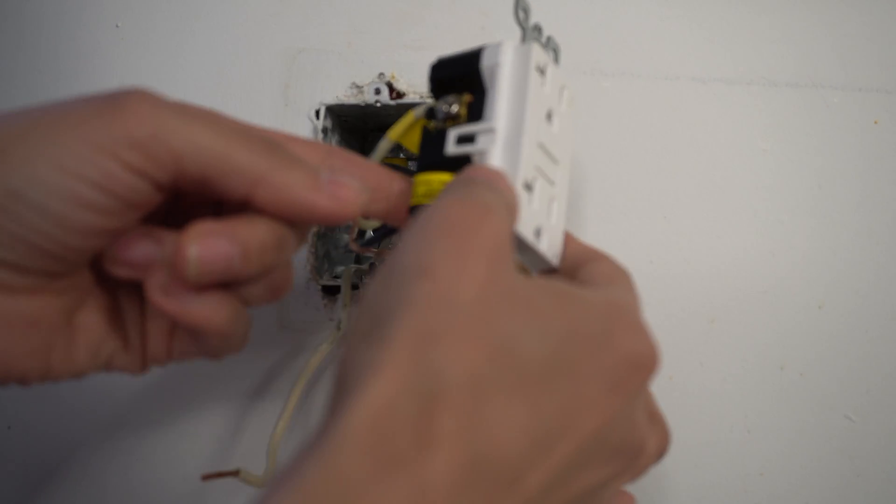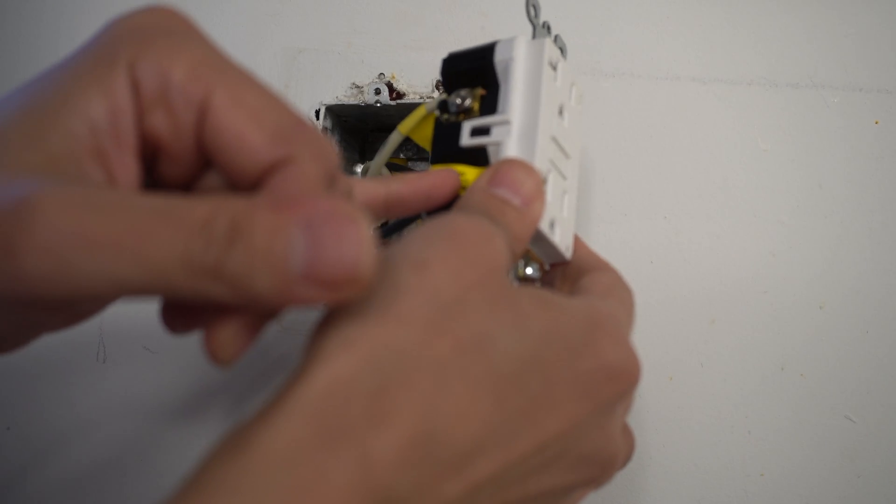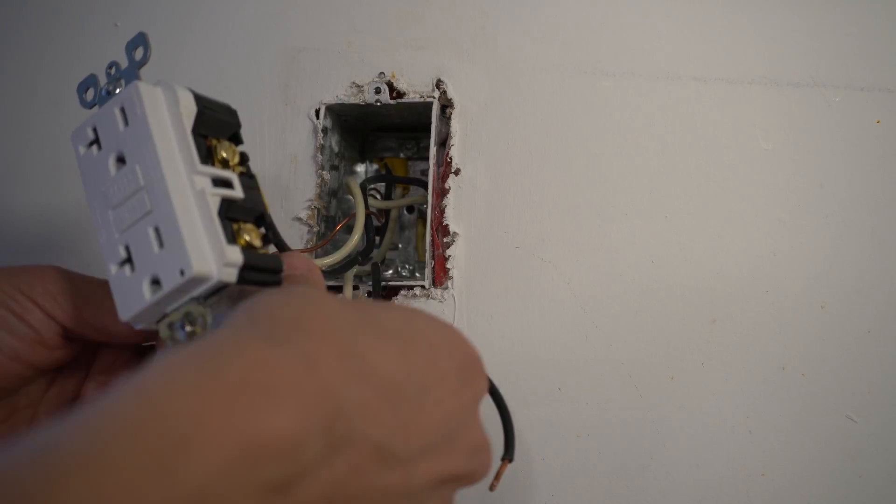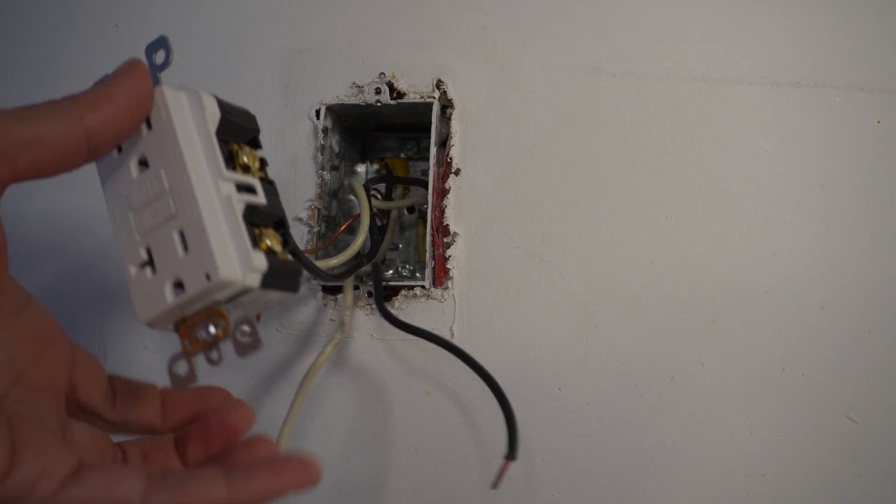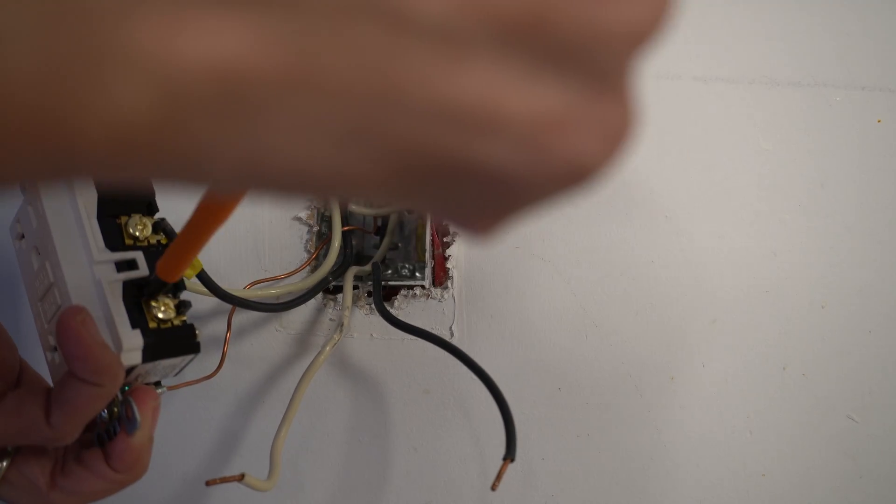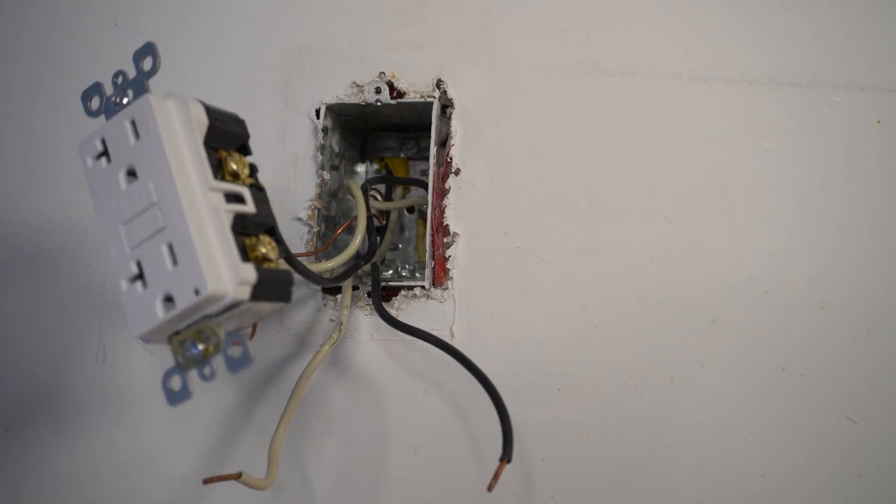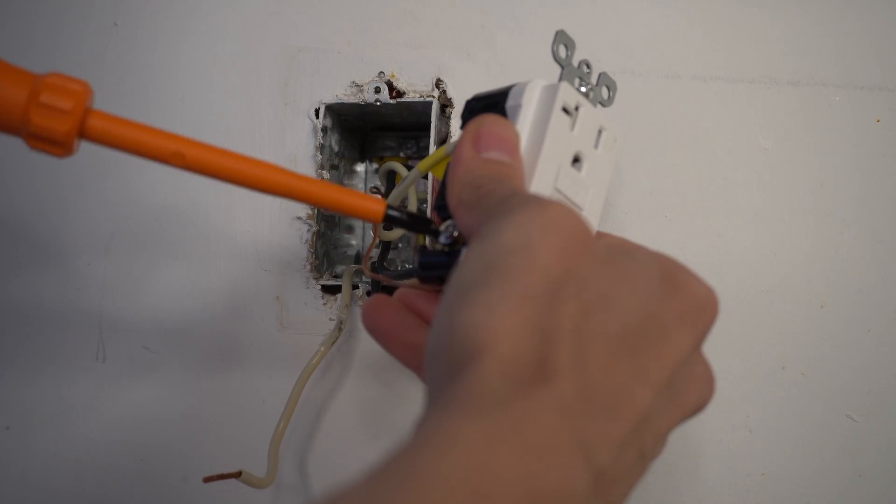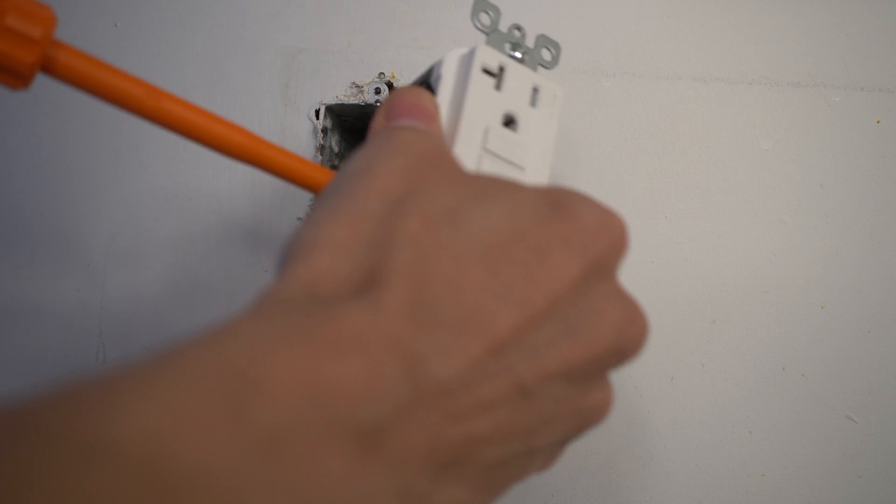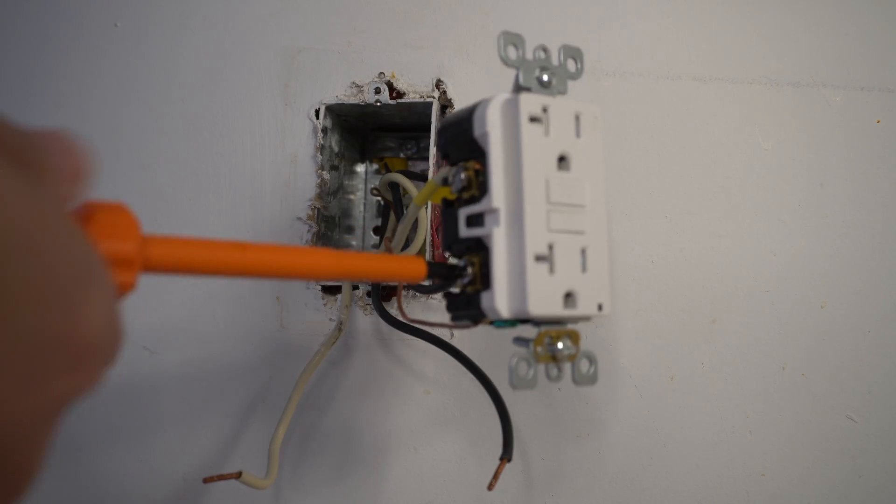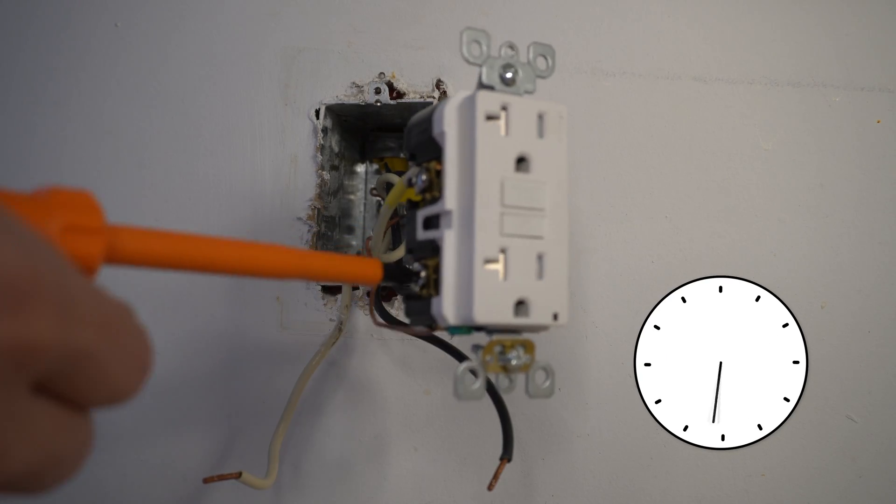We're just going to tighten that one. At this point, we can now remove the tape which is protecting the load terminals. And then we're going to loosen up both sides here, our gold screws or brass screws. And then on the other side, we're just going to loosen that one up as well. And when you tighten your screws, you are going in a clockwise direction.